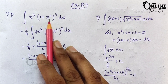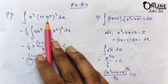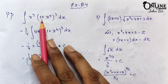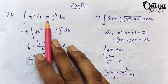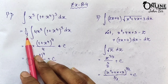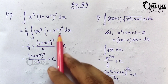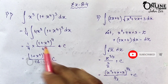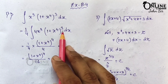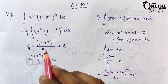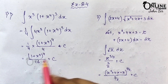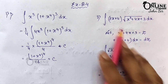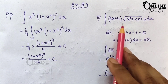Here, (1 + x⁴) is the function. Its derivative is 4x³. Since 4x³ is not directly present, I write (1/4) outside and multiply by 4 inside. So 4x³ is the derivative of the function present here. By the formula, with n = 3, the answer is (1/4) · (1 + x⁴)⁴/4 + C = (1 + x⁴)⁴/16 + C.